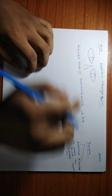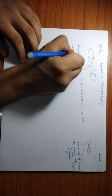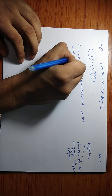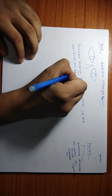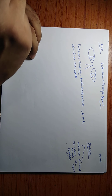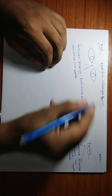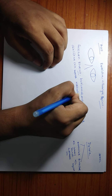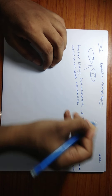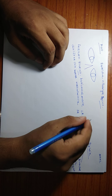Along with face turn, if we have chin elevation or chin depression, then we have some problem with the up-and-down muscles — that means we have some problem with the vertical muscles, which are the superior rectus and the inferior rectus.